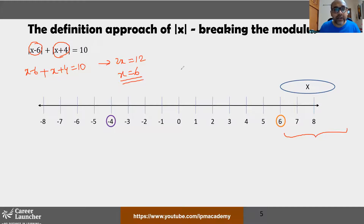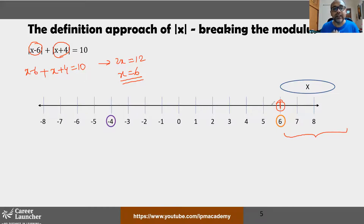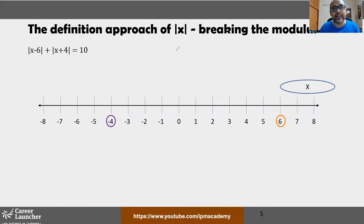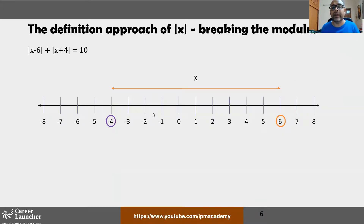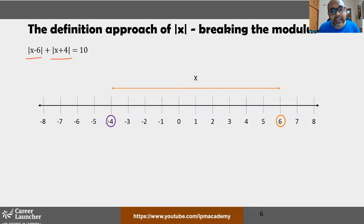x = 6 is the boundary point itself, so we have one answer in the region x ≥ 6. Our job is not done — we now search in the second region, which is between −4 and 6. We need to understand what happens to each modulus when x is between −4 and 6.